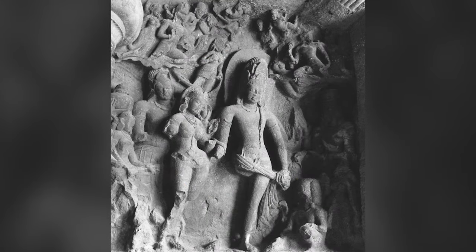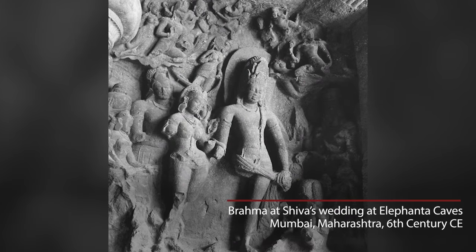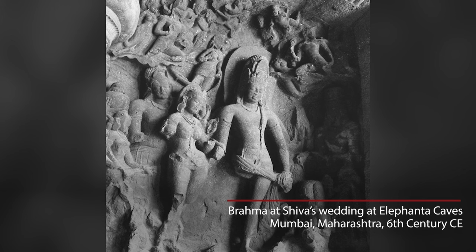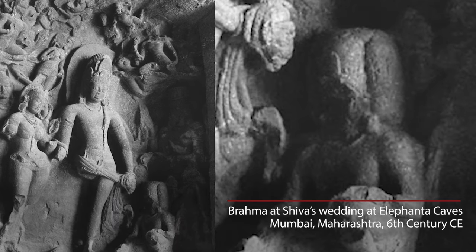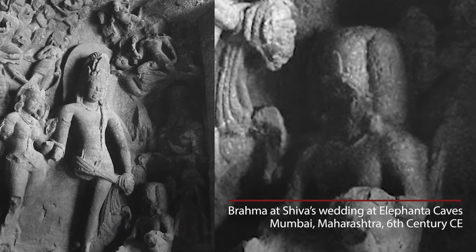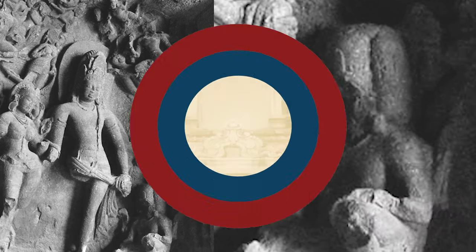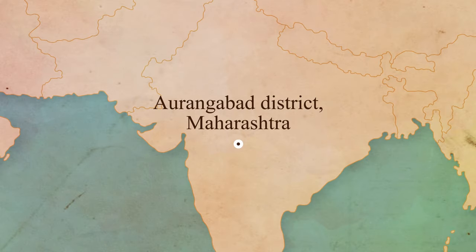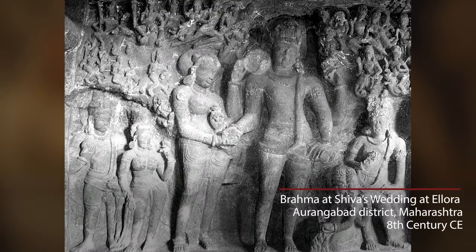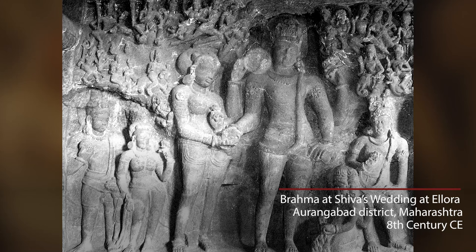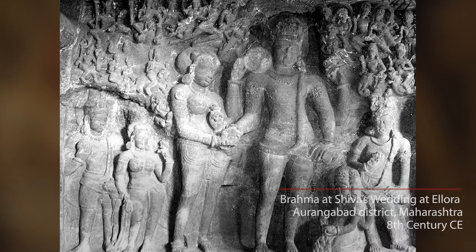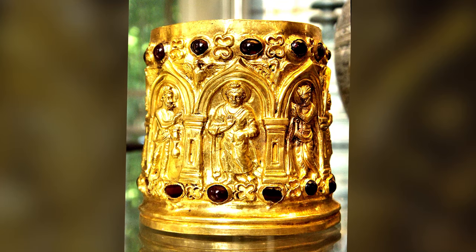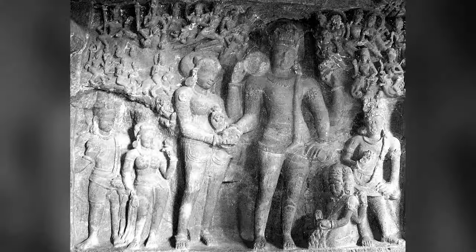Gradually, we start seeing images of Brahma performing the wedding of Shiva and Parvati. We see this image in Elephanta in the sixth century, in Elora in the eighth century. So you see, Brahma's images are appearing as subordinate — first to Buddha, then to Vishnu, then to Shiva.